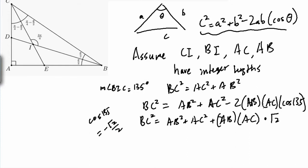So this is the case, I just subbed it in, I just canceled stuff out. And then you reduce it to square root 2 equals BC squared minus AB squared minus AC squared over AB times AC.